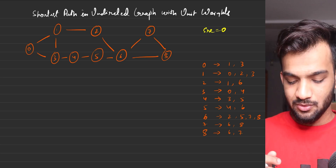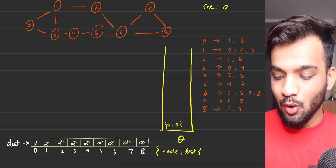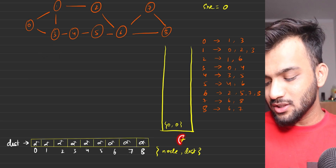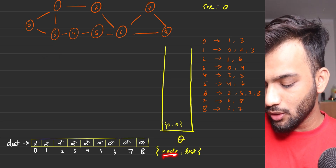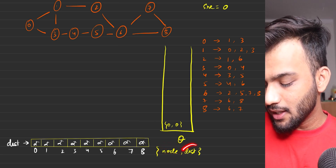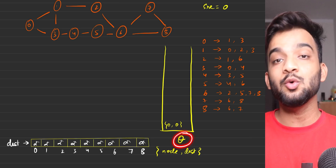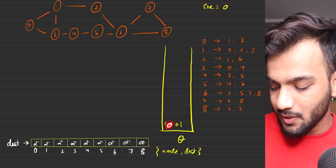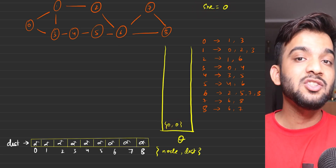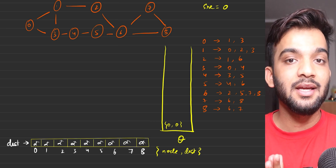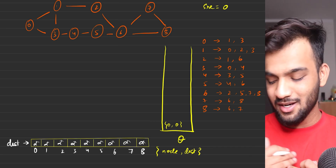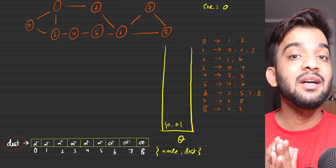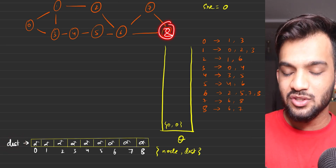To find the shortest path, we will apply a plain BFS algorithm. In BFS, we'll use a queue data structure storing pairs of node and distance. Since the source is zero, we insert zero comma zero — because the distance to reach zero from zero is zero. Next, we declare a distance array. The number of nodes is eight, so we declare a size-nine array to fit index eight as well.